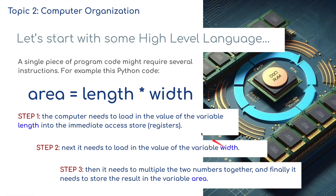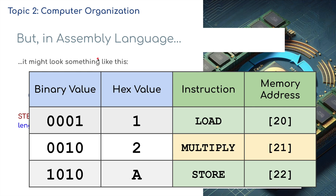Area equals length times width — an example of Python code. Step one, the computer needs to load in the value of the variable length into the immediate access store, into one of the registers. Next, it needs to load in the value for the variable width. Then step three, it needs to multiply the two numbers together. Finally, it needs to store the result in the variable area, which will be in another address in memory.